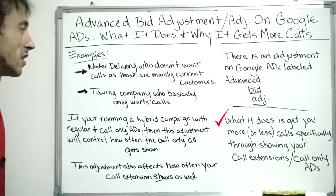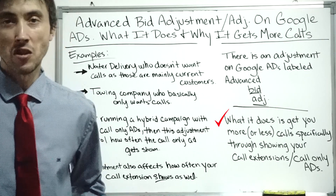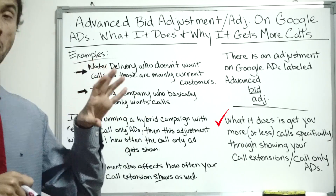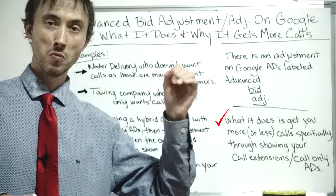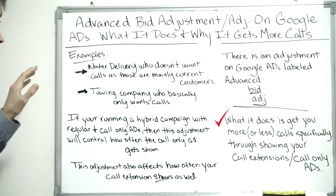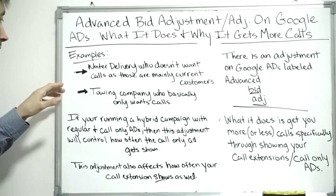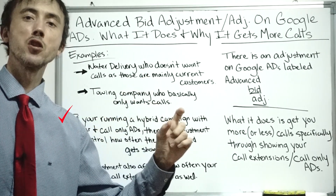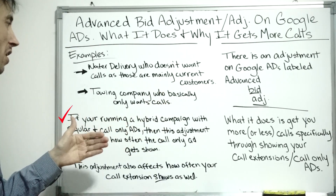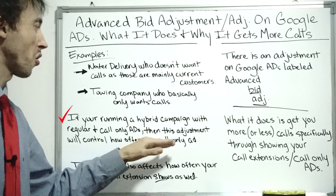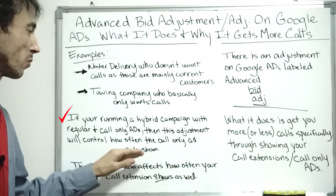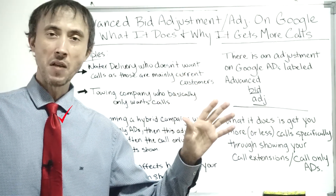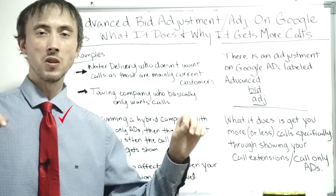It works like any other bid adjustment done at the location, age, gender, or income level — but it specifically affects how many mobile calls you're getting. If you're running a hybrid campaign with both regular search ads and call-only ads in the same campaign, this bid adjustment controls how often the call-only ad gets shown versus the regular ad — which is honestly a poor configuration.